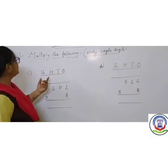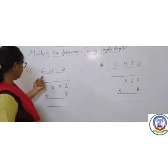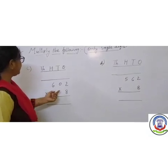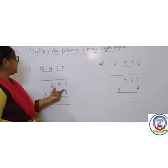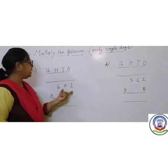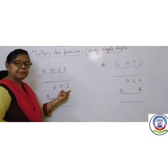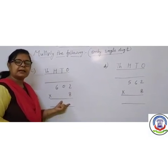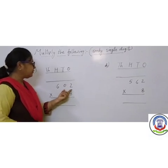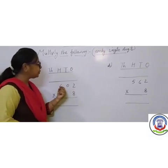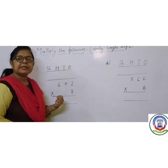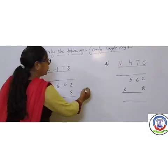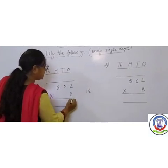Next, number 3: 1's place is 2, 10's place is 0, 100's place is 6, giving us 602. Multiply by 8 — 8 is the multiplier and we find the product. Start with the 1's place: 8 multiplied by 2 — 8 twos are 16. Write 6 in the 1's place and carry forward 1.